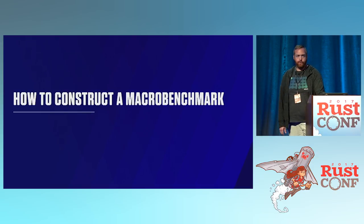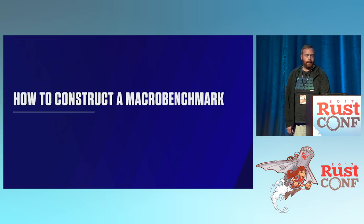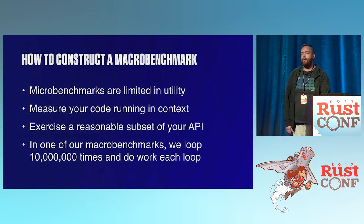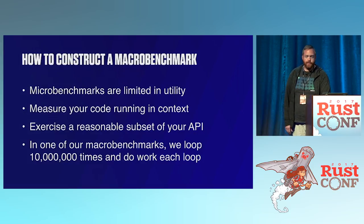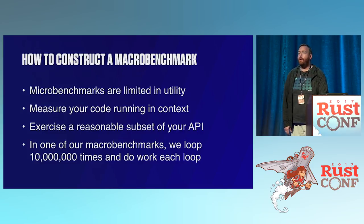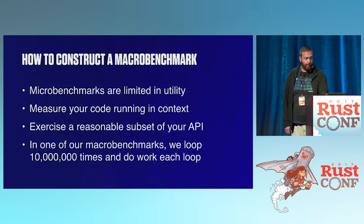While micro benchmarks are really useful and you should write them, what we've found is that writing macro benchmarks is another great use of time. A macro benchmark is taking your API and using it in the same context your users would. Micro benchmarks are limited because you run something a handful of times — you don't really know how well it's running in the full context of your CPU. In our macro benchmark we exercise the API in a loop of 10 million times.